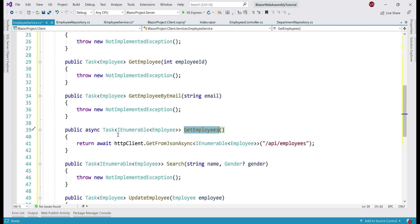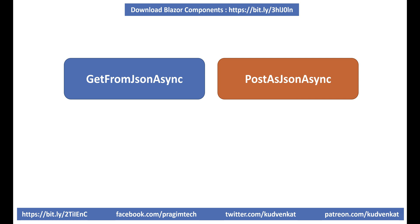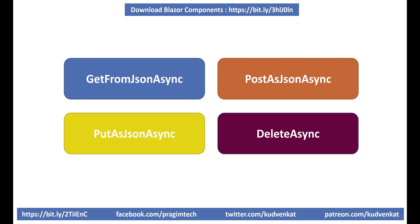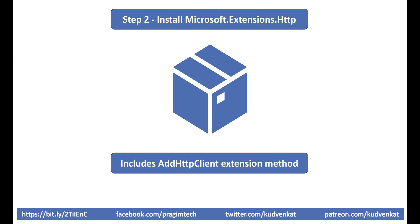We'll provide the implementation for the rest of the methods in this EmployeeService in our upcoming videos. In addition to GetFromJsonAsync, we also have PostAsJsonAsync, PutAsJsonAsync, and for deletion, it's simply DeleteAsync. We'll see these methods in action in our upcoming videos. Our second step is to install the NuGet package microsoft.extensions.http, which includes the AddHttpClient extension method.